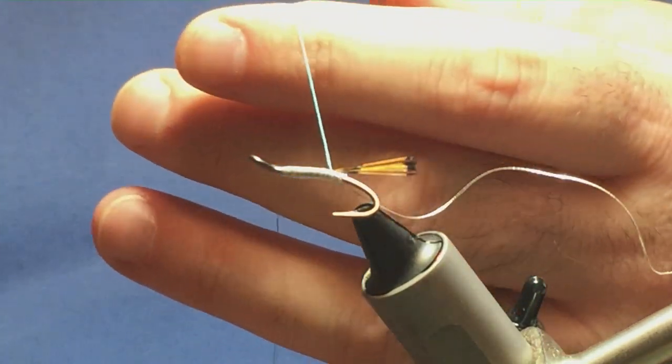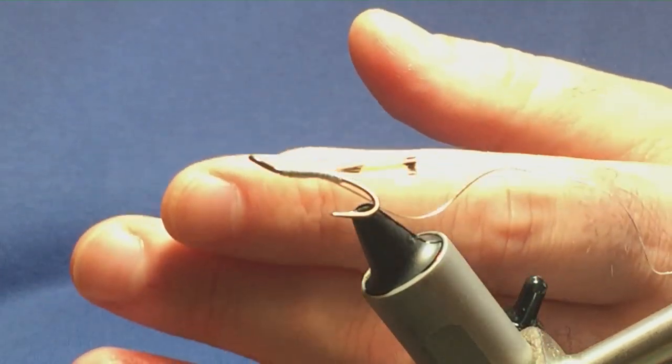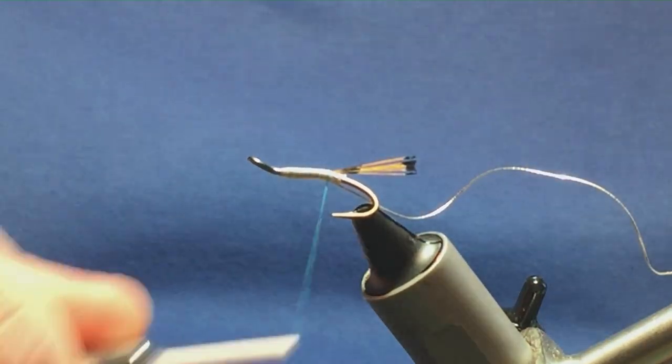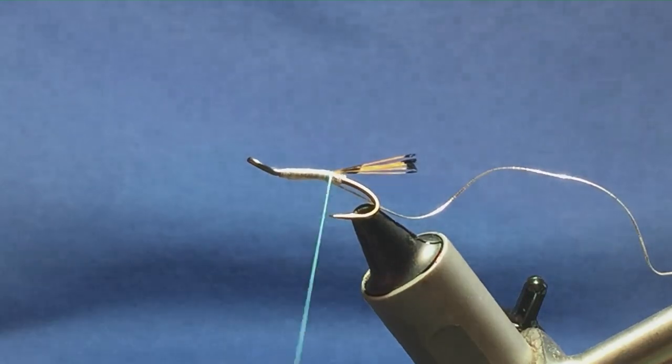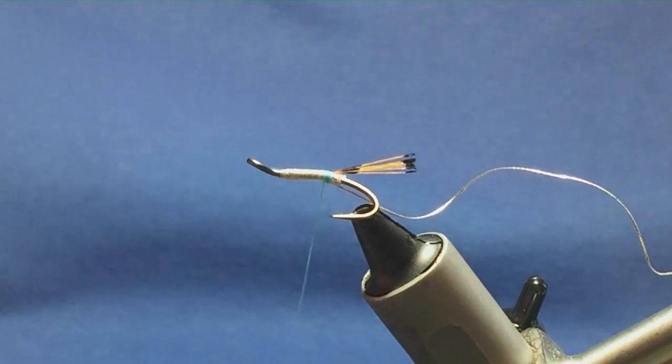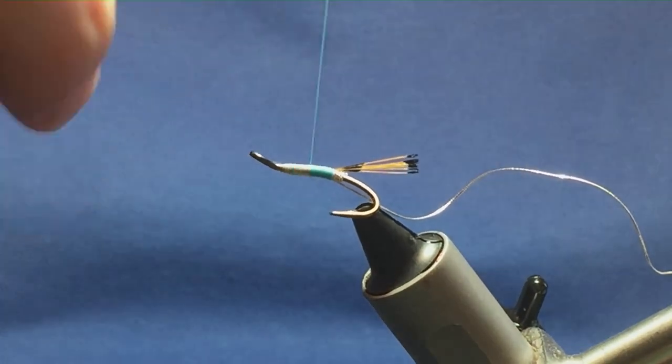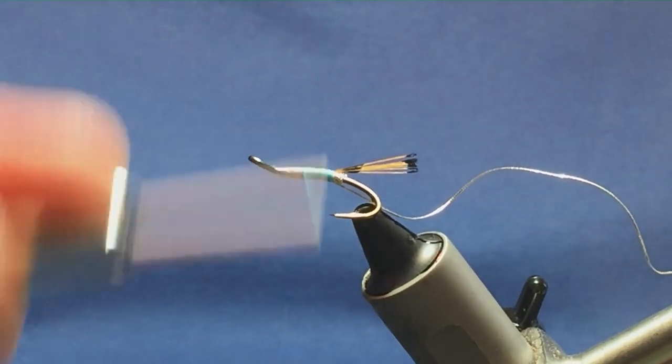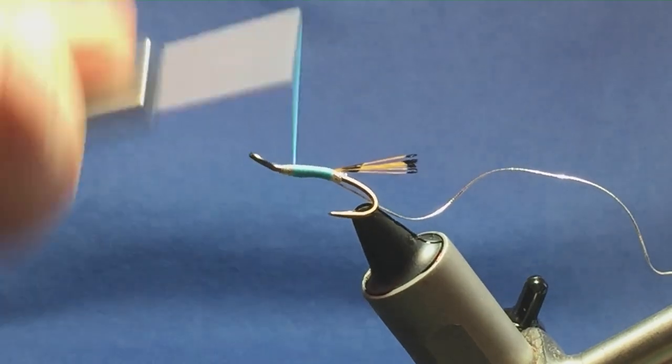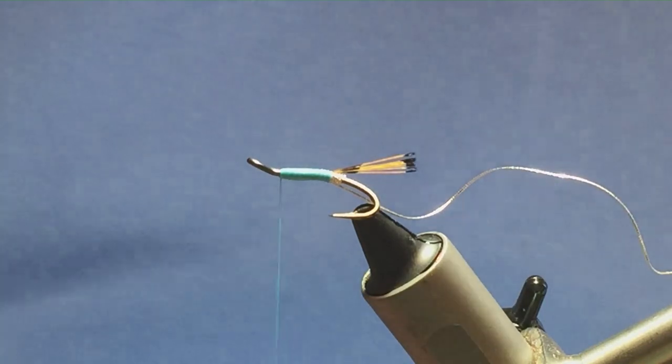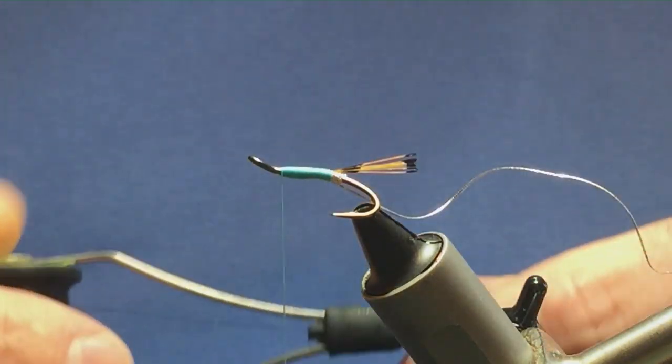Then we can bring up our glow braid floss. I just like to have it on a bobbin holder. I think you can secure the floss in. That will be extra security, just stronger, which makes the fly a bit stronger. So just bring the glow braid floss up. Close touching turns right the whole way up to there. Now just leave it there for a second, because the head on the fly is black.